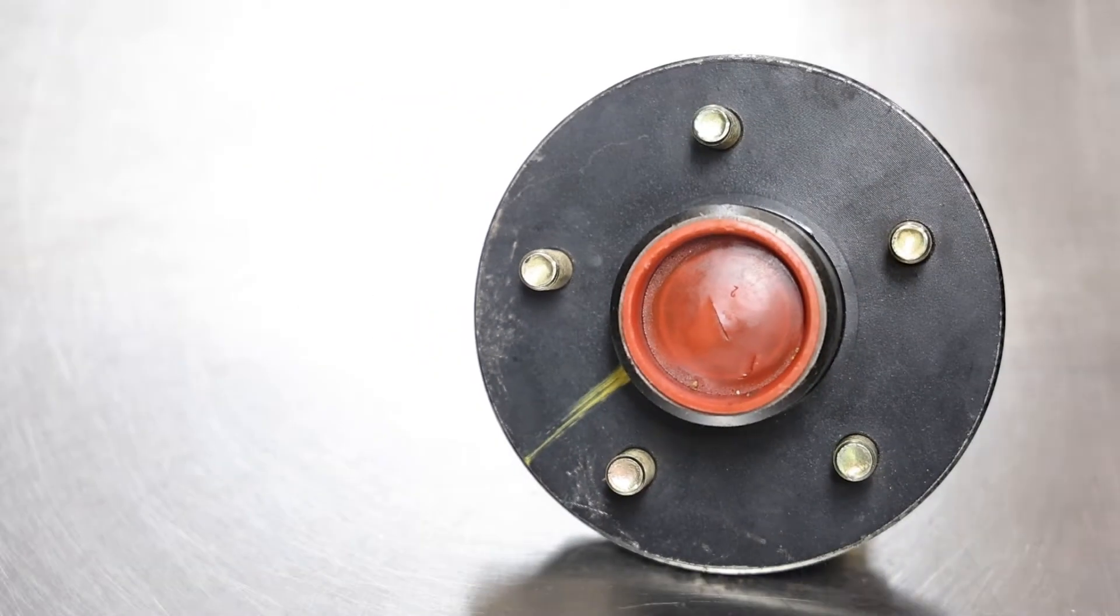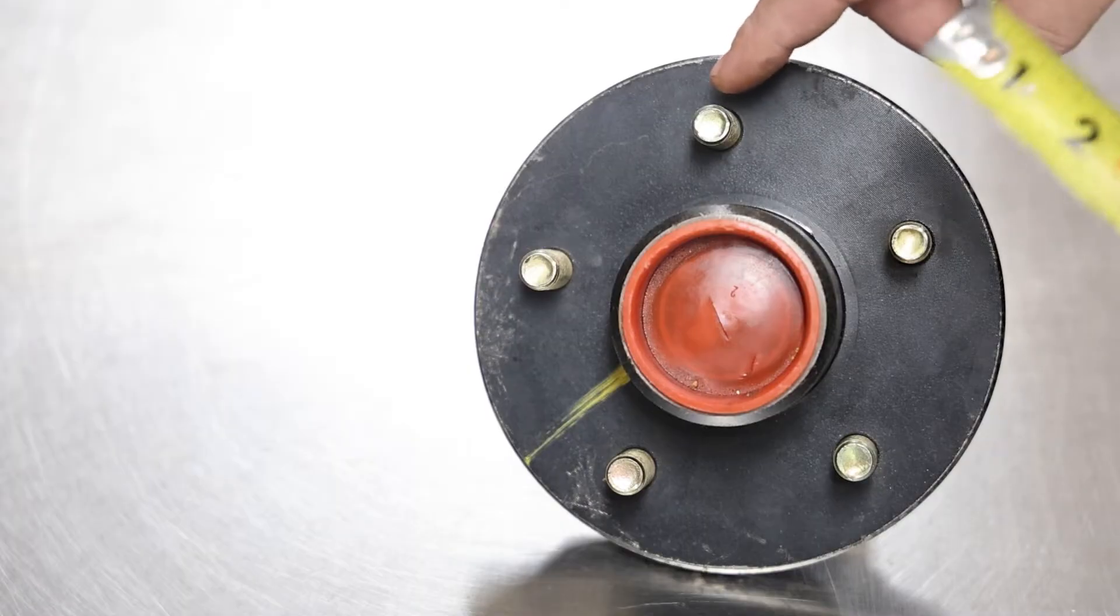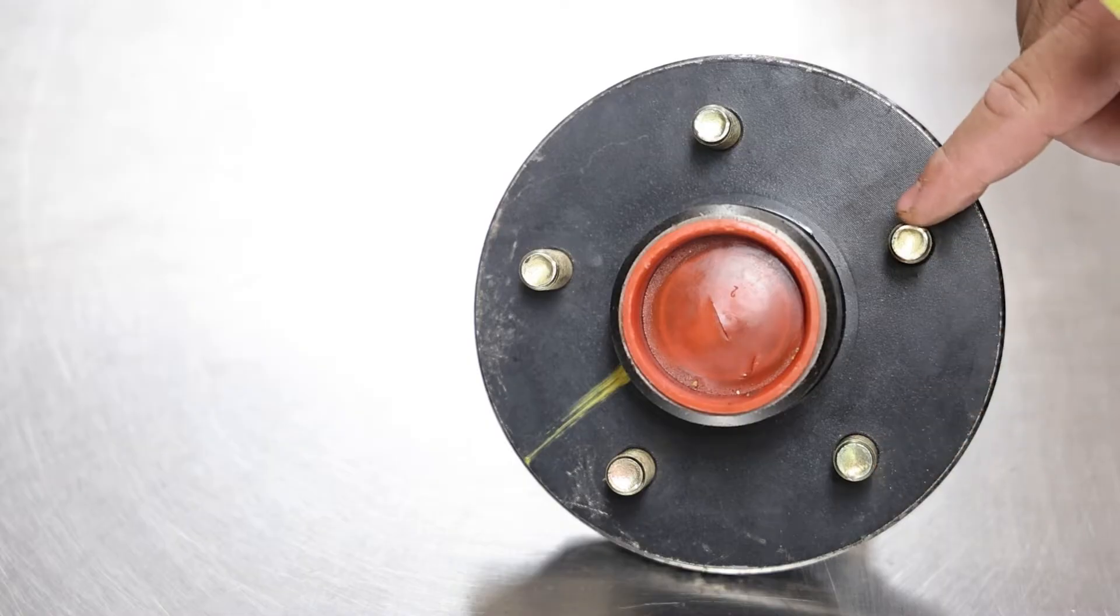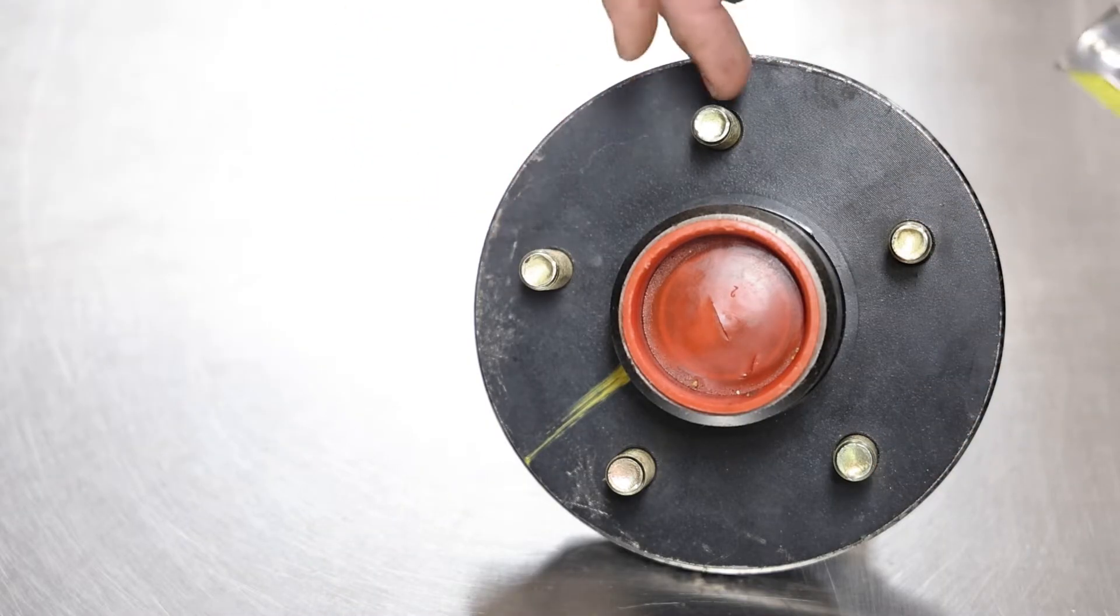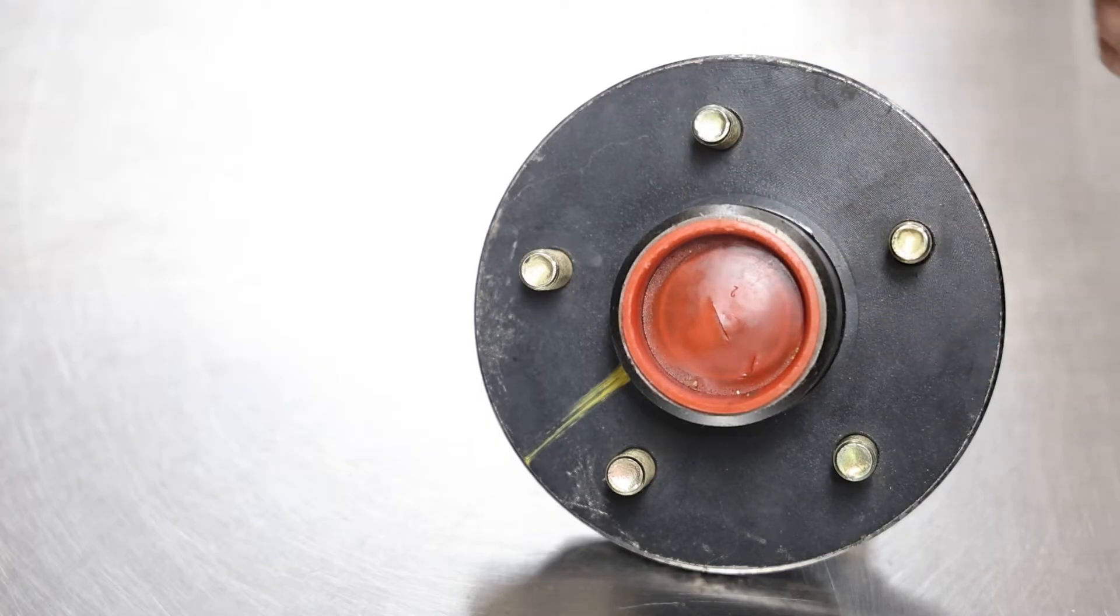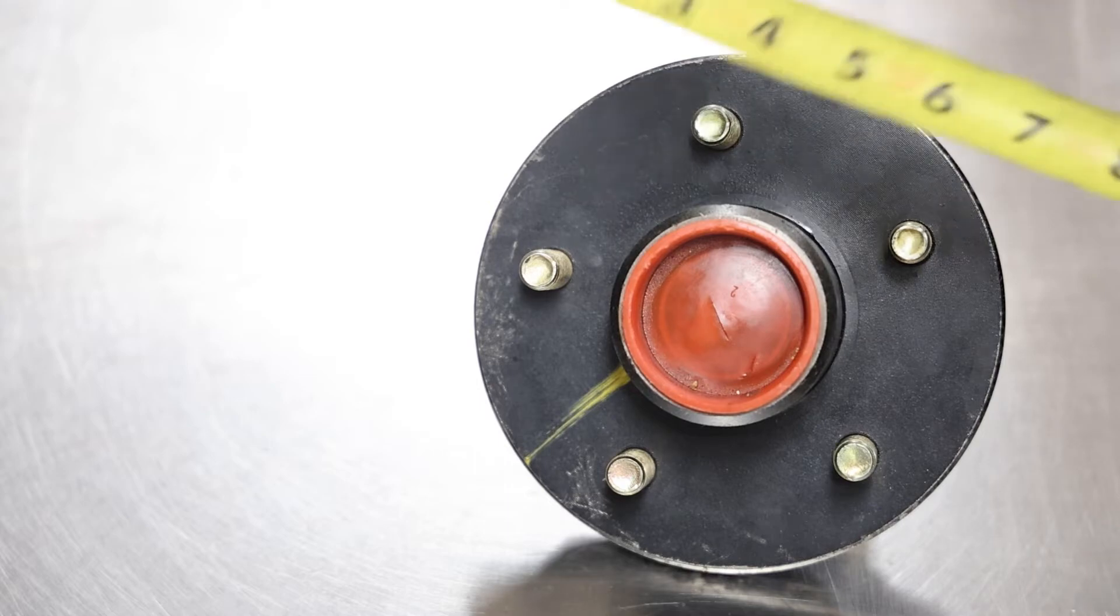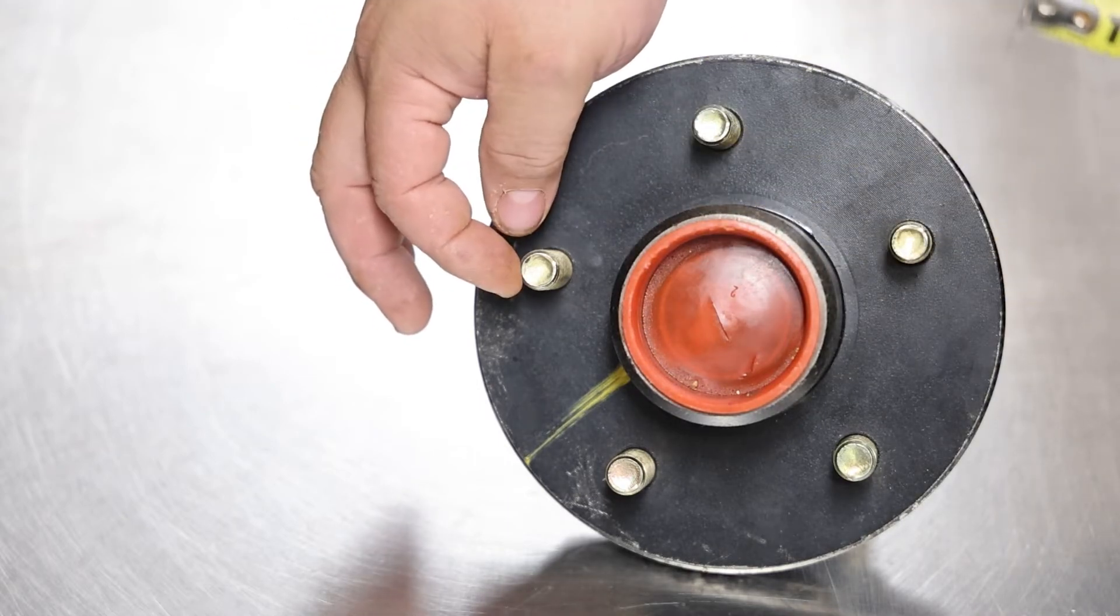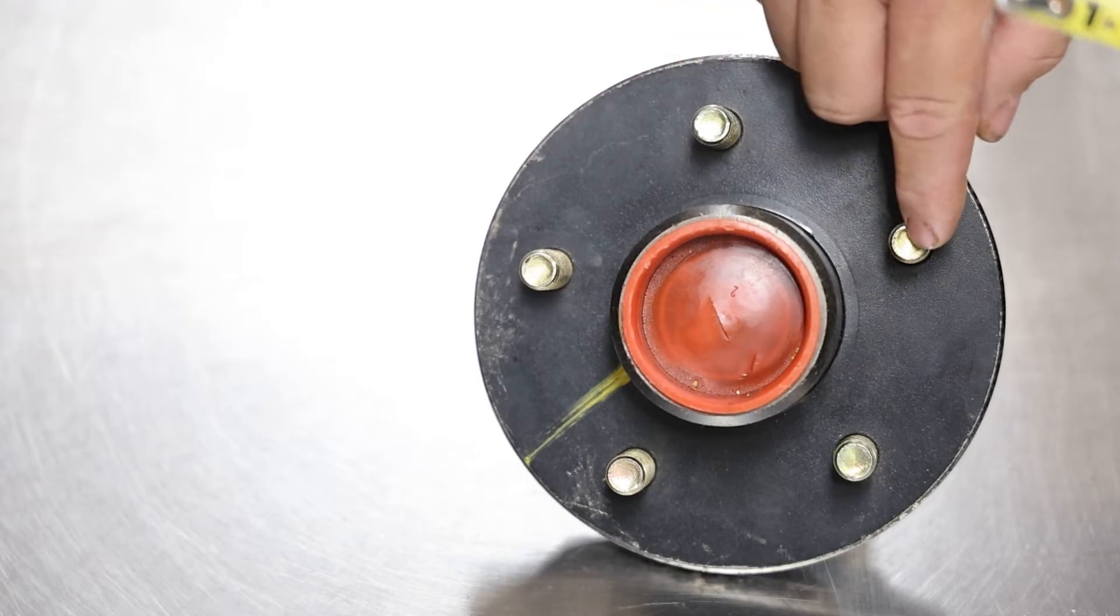Now the next option, which is more common, is you're going to measure from this stud to this stud. So you're going to skip a stud. It really doesn't matter which stud, you're going to skip a stud, and that's going to give you your actual bolt pattern. But in order to do that correctly, you actually need to hook to the back side of this stud and measure to the center of this stud.